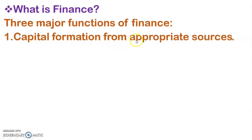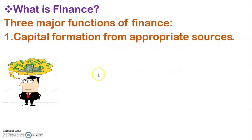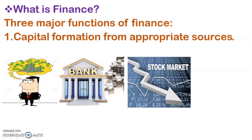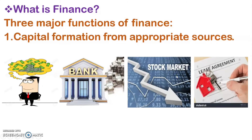The first major function is capital investment — financial formation from an appropriate source. A financial manager thinks about how to collect funds and where to collect them from. He may collect funds from a bank, the stock market, a leasing agreement, or other sources. But before collecting funds, he must consider the cost of capital of each source, and he will choose the source whose cost of capital is the lowest.